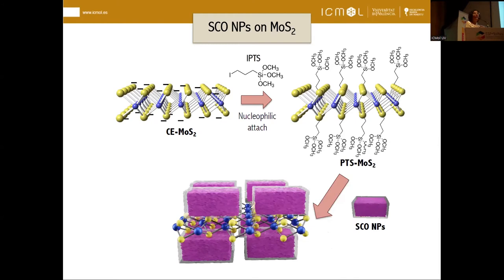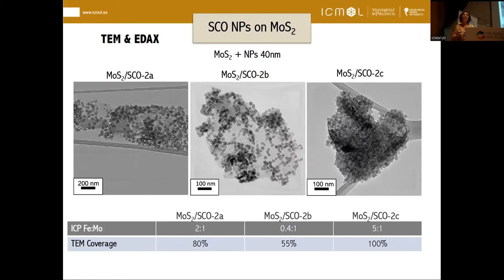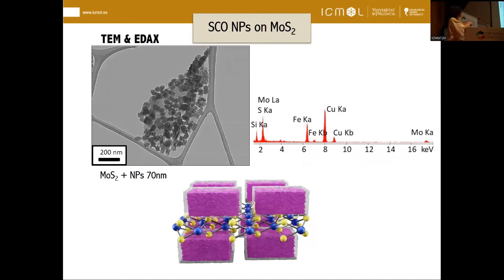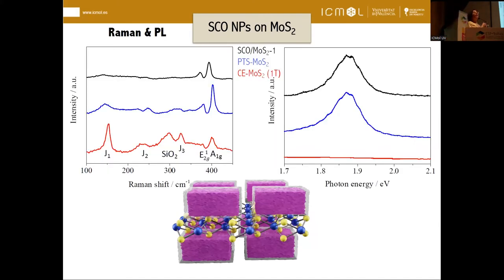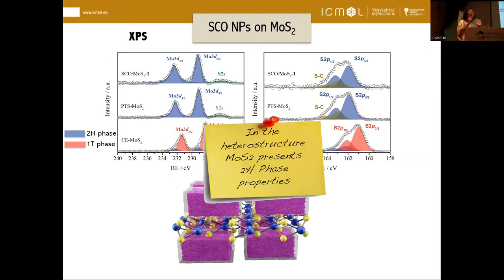Then we go to the next step — attaching the nanoparticles on top of our molybdenum disulfide. After mixing to form the composite, we get the nanoparticles decorating the molybdenum disulfide. We can play with nanoparticles of different sizes in different ratios and control the amount of particles surrounding the layers. After attaching the nanoparticles, there is no further phase transition: photoluminescence is maintained, XPS also supports this. So in our heterostructure, what we have finally is molybdenum disulfide in the 2H phase — semiconducting behavior with an open band gap. This is important because if we want to play with strain, it is nice to have an open band gap to modulate it.